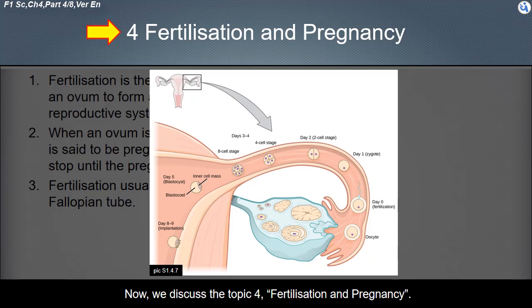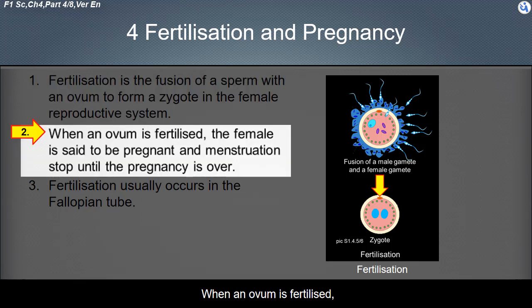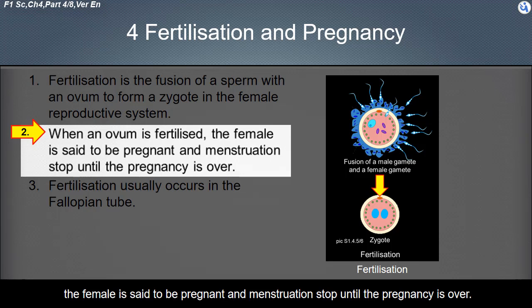We discuss the topic of fertilization and pregnancy. Fertilization is the fusion of a sperm with an ovum to form a zygote in the female reproductive system. When an ovum is fertilized, the female is said to be pregnant, and menstruation stops until the pregnancy is over.